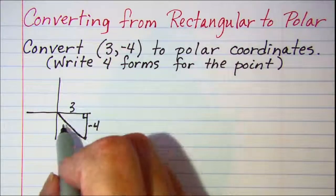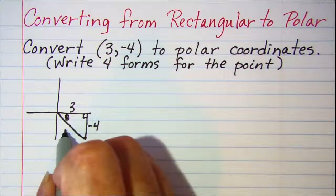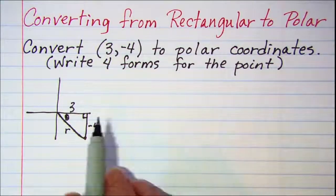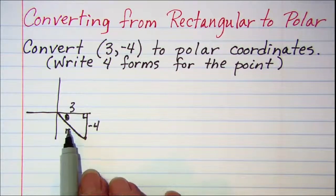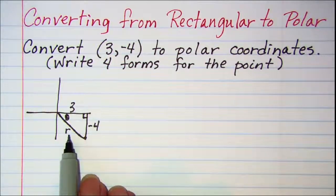We're looking for r and θ. Now we can use the Pythagorean theorem, or we can see that this is a 3-4-5 right triangle.